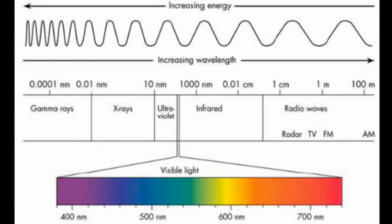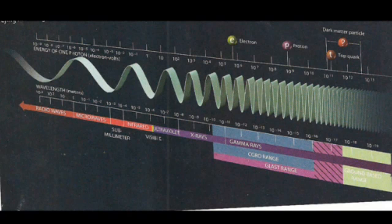The light that you and I see with our eyes is just a small range of frequencies on a much larger spectrum called the electromagnetic spectrum.